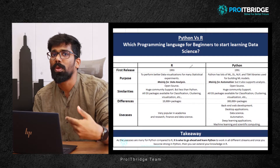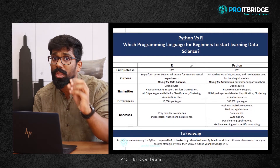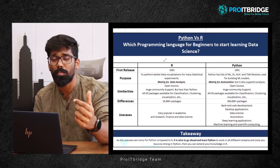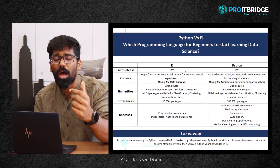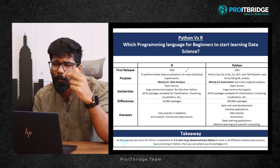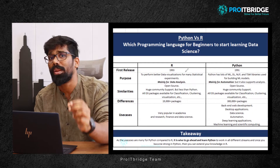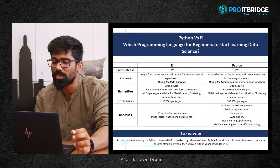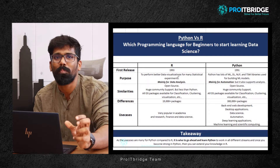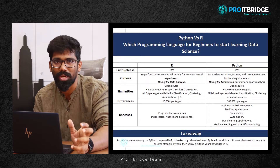Why? Because with Python, we can do data analysis and also automation. But R programming language is mainly useful for data analysis. So that's why the number of packages is also much less in R.